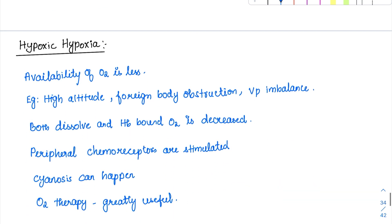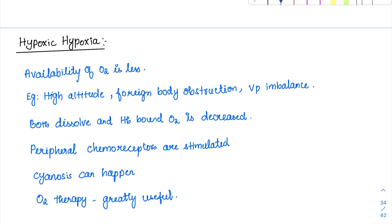Coming to the first type — hypoxic hypoxia. As the name suggests, there is hypoxia in the atmosphere itself, or there is a ventilatory problem preventing oxygen from reaching the exchange area. Here the availability of oxygen is low. Examples include high altitude, foreign body obstruction, and ventilation-perfusion (V/Q) mismatch.